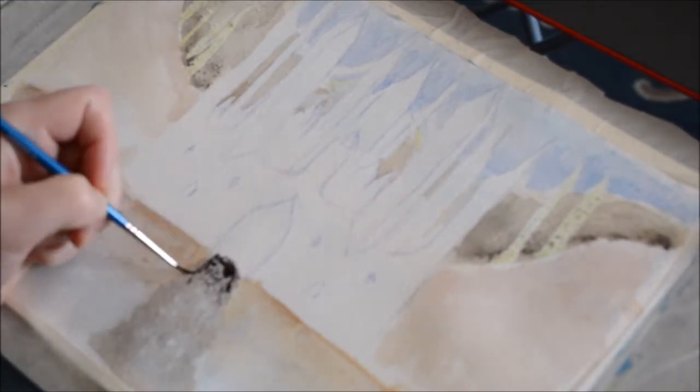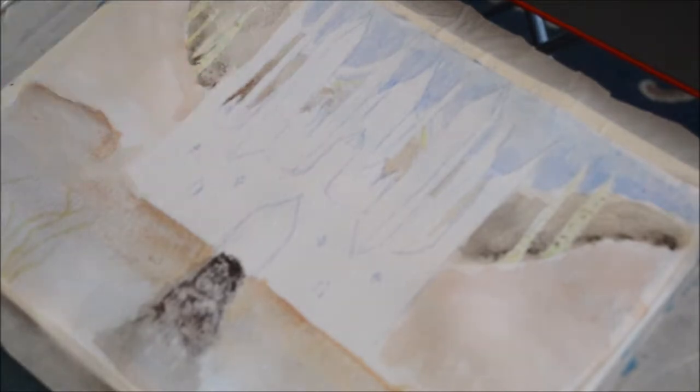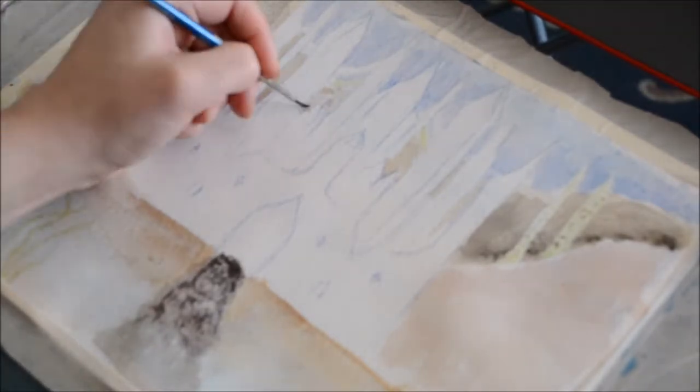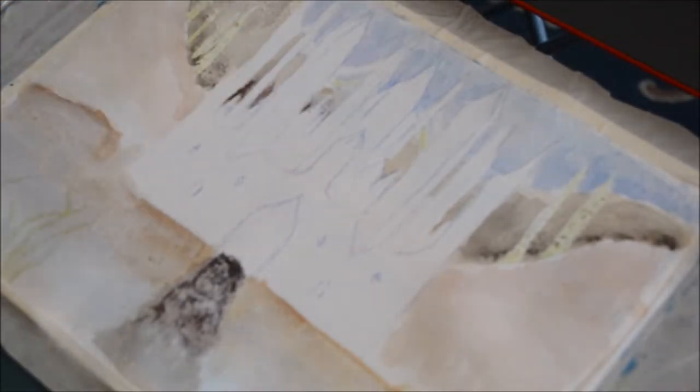For the newer mountains I blocked in the basic shape using a wet on wet technique with a more orangish brown color, and then I salt glazed by sprinkling some salt on the still damp paint and letting it dry completely. This helps to add a nice rocky texture.